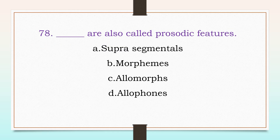Which are also called prosodic features? Options: suprasegmentals, morphemes, allomorphs, or allophones. The answer is: suprasegmentals.